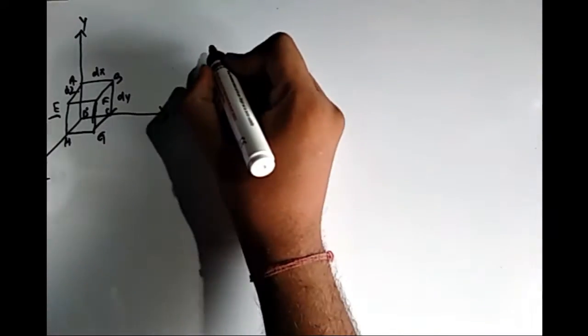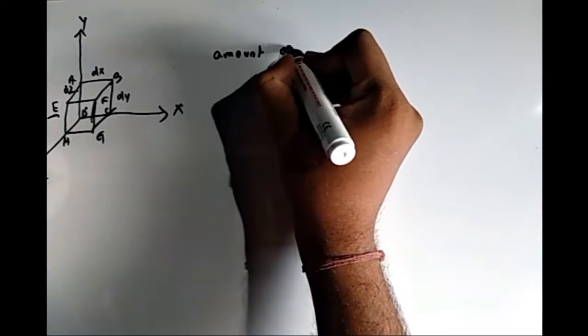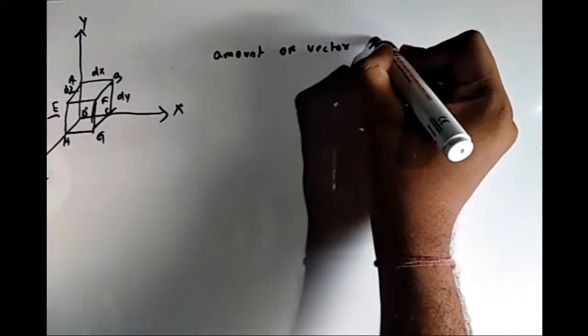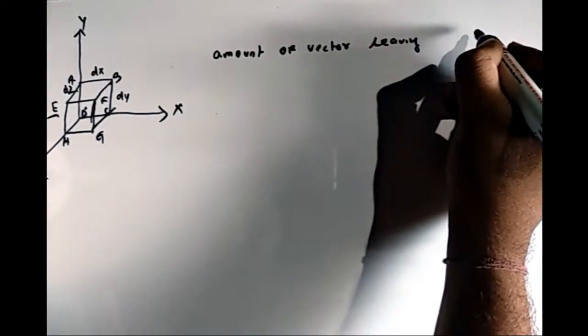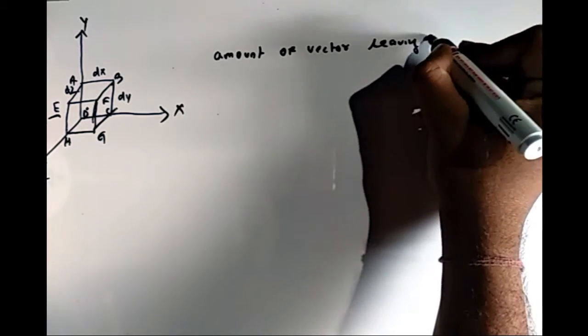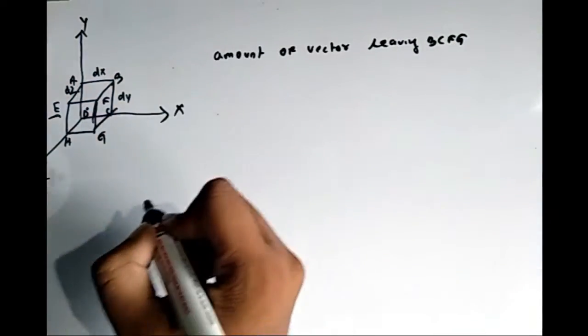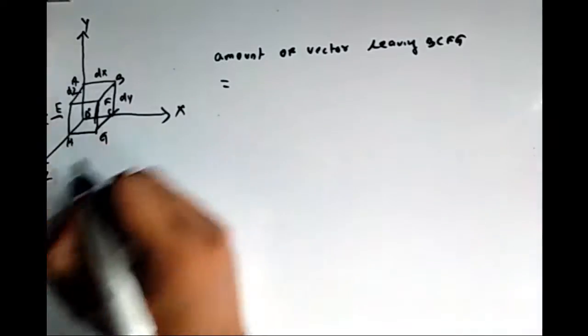Now, in the x coordinate, the vector leaving surface VCFG has surface area equal to Vx plus half del Vx by del x times dx dy dz.